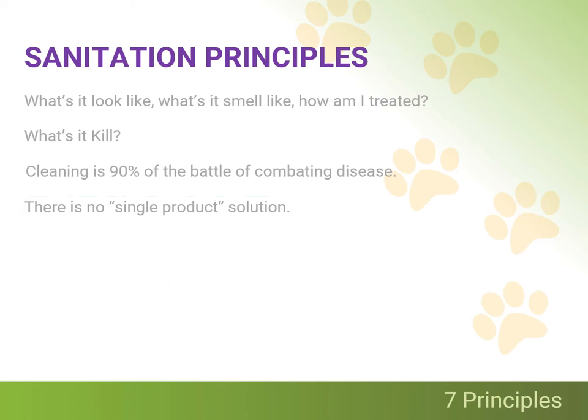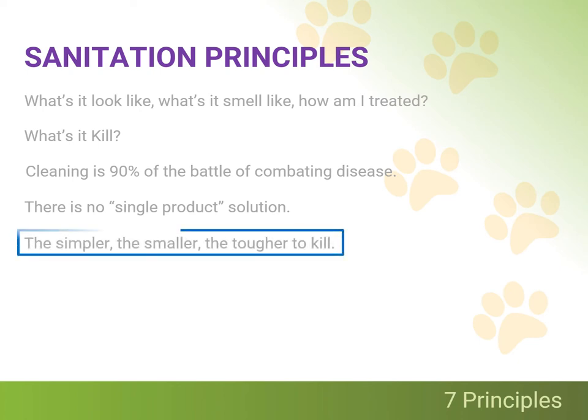Next is a generalized rule of thumb for you to remember regarding microorganisms: the simpler, the smaller, the tougher it is to kill. That's why microorganisms like canine parvovirus are so difficult to deal with. Parvo is a virus, it's small, and it lacks an outer envelope. Compared to most bacteria, it is simpler, smaller, and therefore tougher to kill.